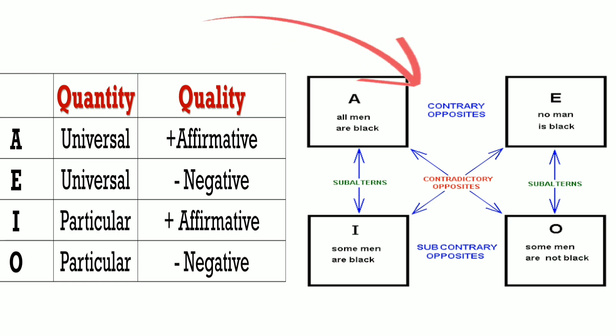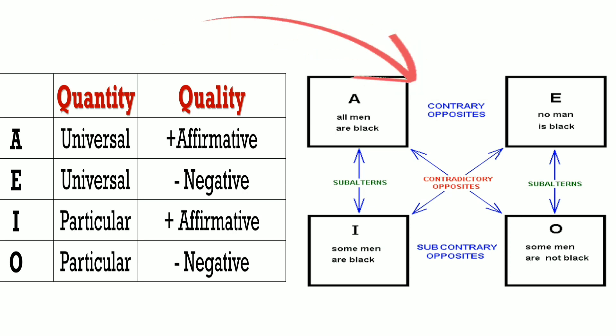I proposition: 'Some men are black.' According to A, all men are black, but according to I, only some men are black. According to O, 'Some men are not black.' And according to E, 'No man is black.' I and O are particular — a portion only — while I is affirmative and O is negative.